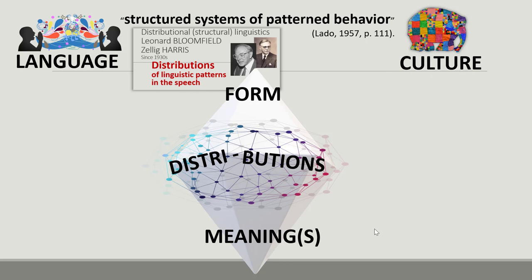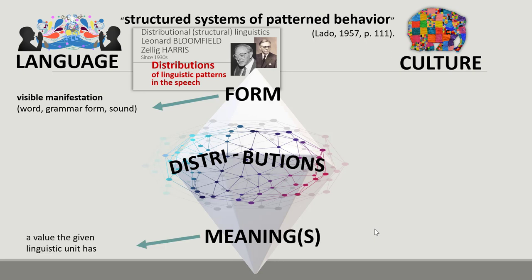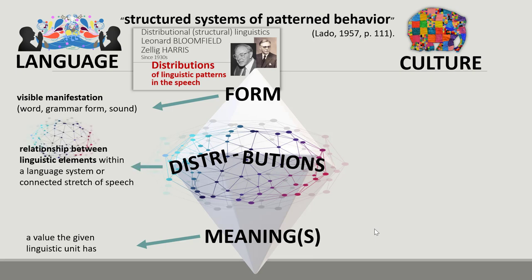Lado borrowed this terminology and approach from American distributive or structural linguistics, the dominating linguistic trend in the USA at the time. Applied to the analysis of a linguistic element, form is the visible manifestation of a linguistic unit such as a word, grammar form, or phoneme. Meaning is a value or set of values the given linguistic unit has. Distribution refers to the relationship between linguistic elements within a language system and the rules of how elements can be combined in speech, allowing deeper understanding of meanings.